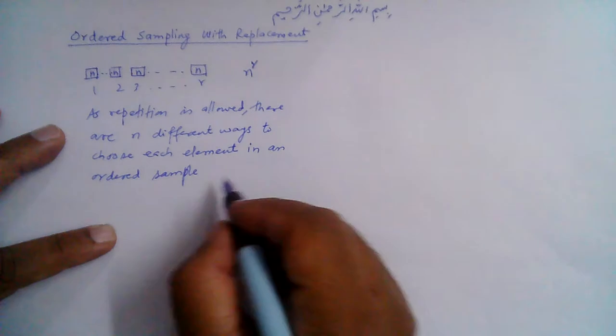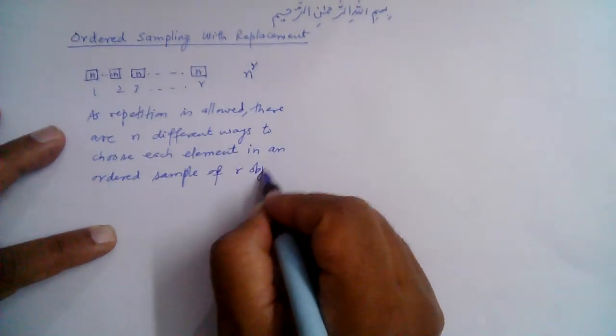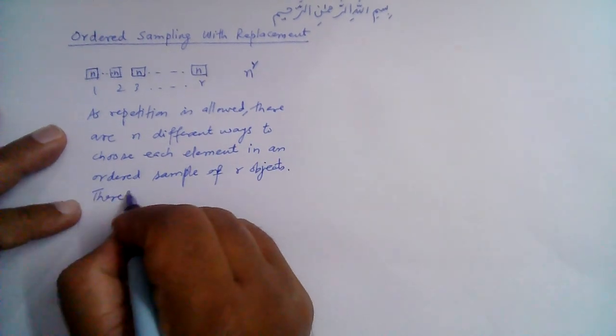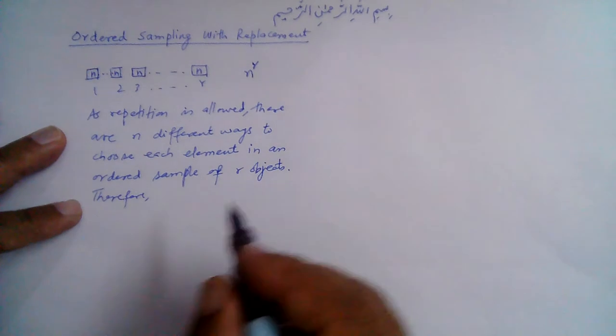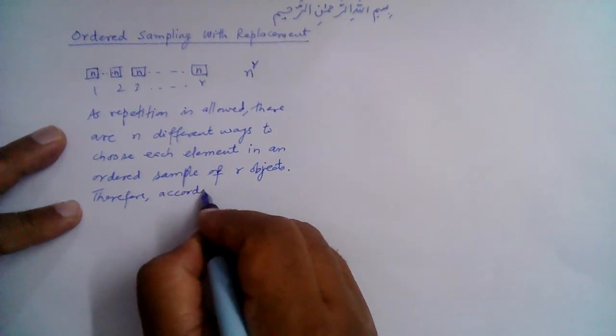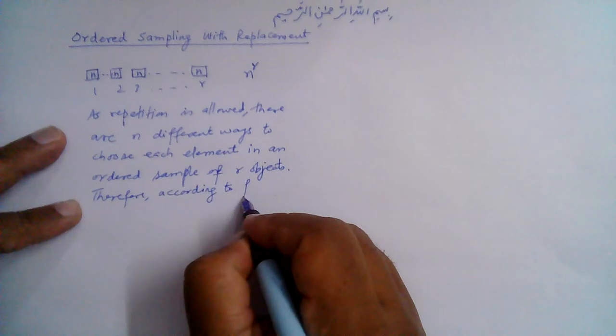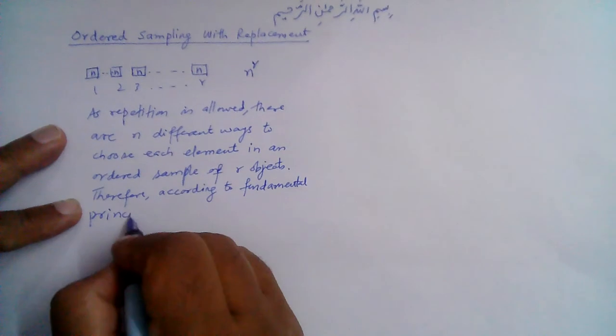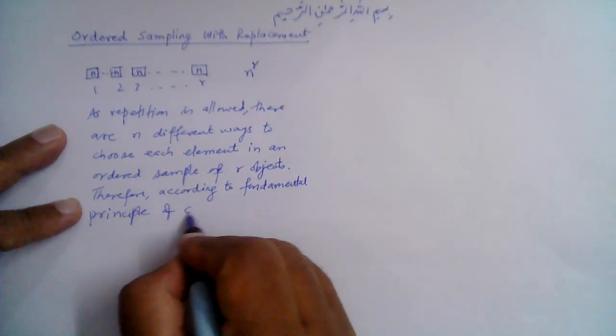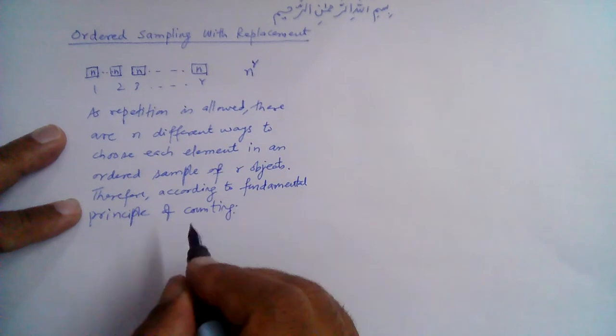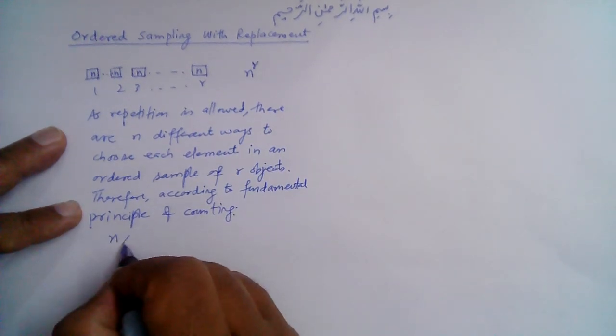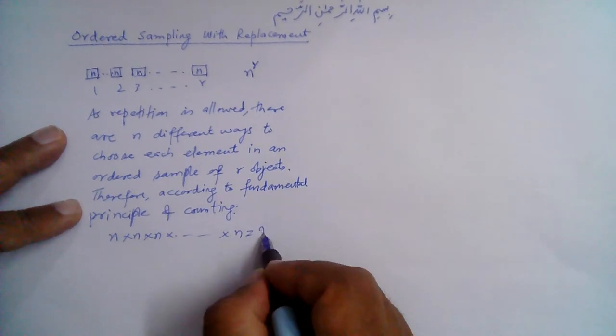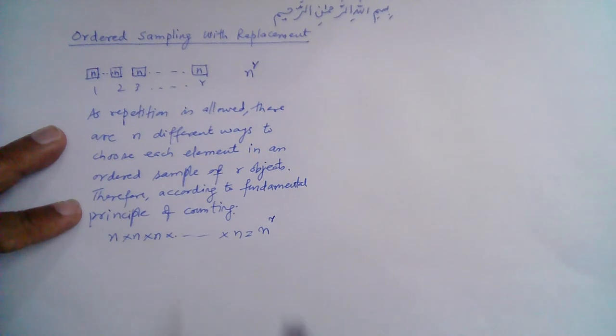Therefore, according to fundamental principle of counting, the first object can be chosen n ways, the second also n ways, third also n ways, and so on till r is n ways. So n raised to the power r, this is r times.